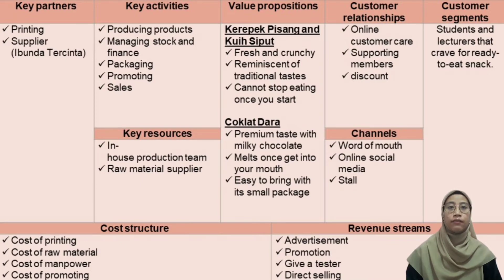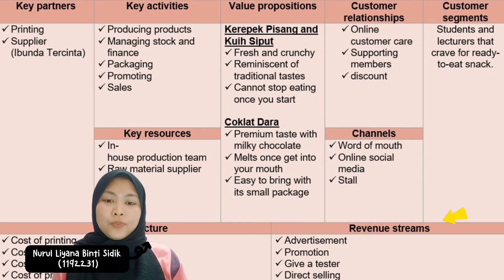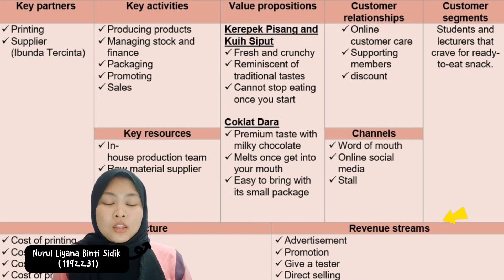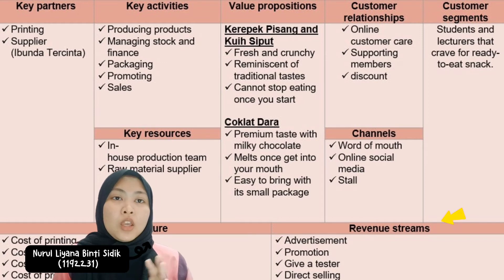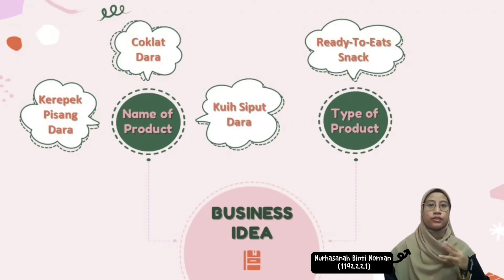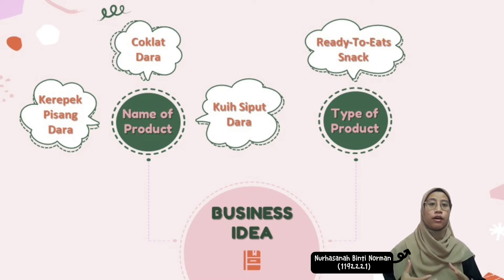Lastly, revenue streams. The ways we gain profit from customers include: advertisement related to our products such as interesting pictures and videos; second, promotions; third, giving free testers to customers; and fourth, direct selling. We produce three main products: keripik pisang dara, coklat dara, and kuih sibuk darun — all ready-to-eat snacks convenient for everyone to grab and consume.